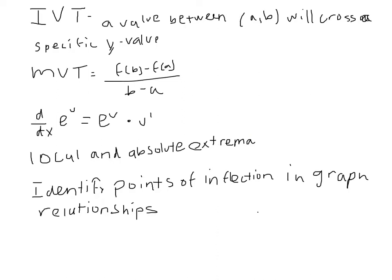The intermediate value theorem says that a value between A and B, such as C, is going across a specific line and therefore have one of the Y values in the range of A and B. Make sure you know how to distinguish the intermediate value theorem versus the mean value theorem, which is my next point.